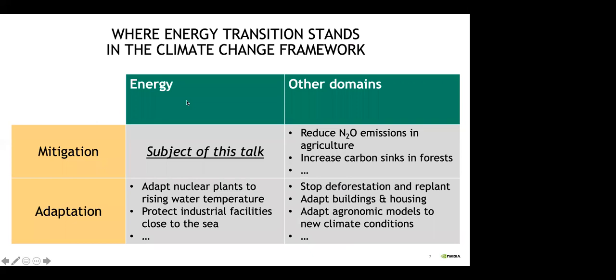There are two types of approaches to responding to climate change: acting on the causes or acting on the consequences. If we act on the causes, this refers to reducing greenhouse gas emissions by reducing the share of fossil fuels or by carbon capture and storage — this is called mitigation. In the energy domain, this is the subject of this talk, though other domains also contribute to mitigation, like reducing N2O emissions in agriculture and increasing carbon sinks in forests. Acting on the consequences, such as increased flooding and more intense storms, is called adaptation — but we're going to concentrate on mitigation in the energy area.